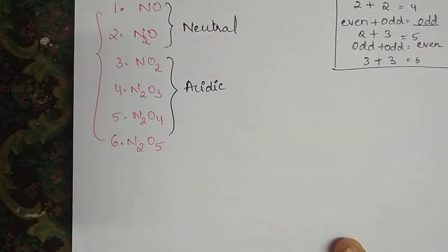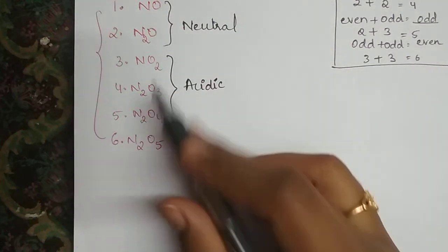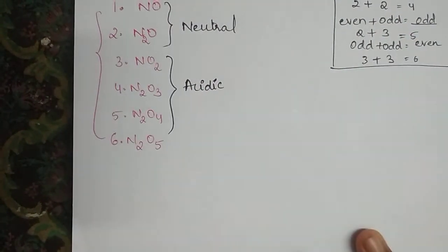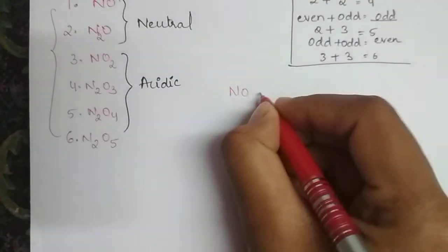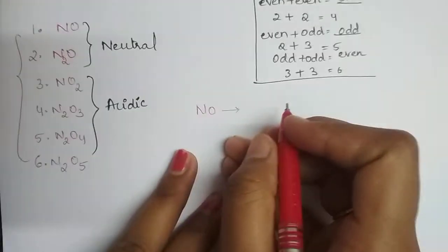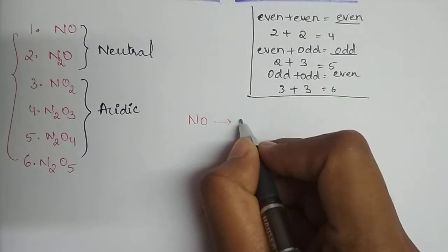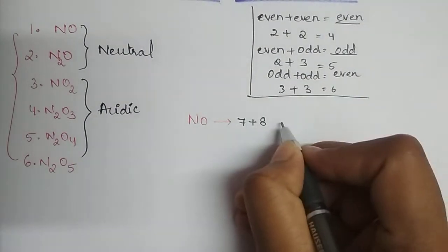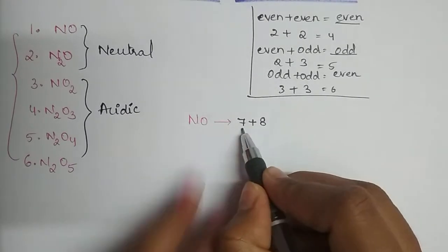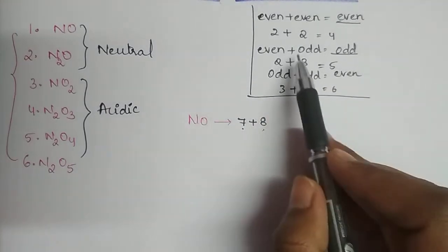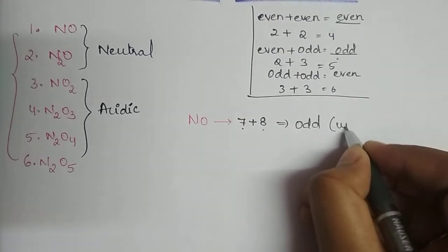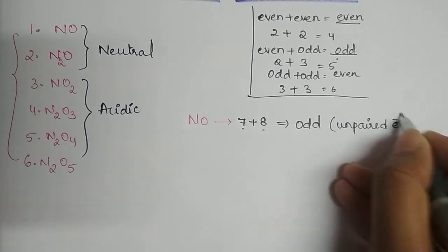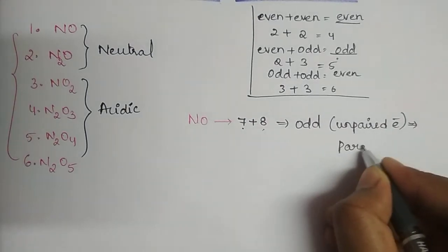To know the magnetic nature, we need to know the atomic numbers. For NO: nitrogen has atomic number 7, oxygen has atomic number 8. So 7+8 = 15. That is odd plus even, which gives odd. When we get an odd total, there are unpaired electrons, so the molecule is paramagnetic in nature.